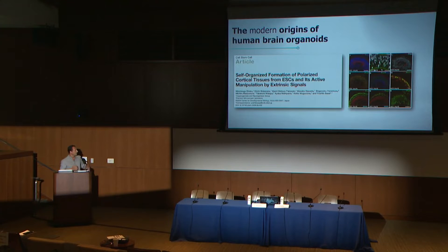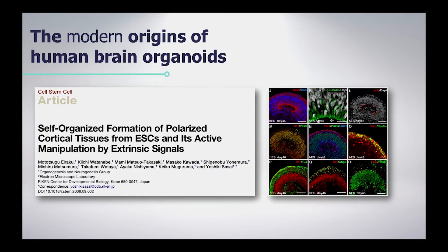Brain organoid technology is not new — some people think it is quite new, but in fact it was developed by Yoshiki Sasai in 2008. This is the first description in a Cell Stem Cell paper showing that if you just neuralize cells in suspension, they will self-organize and form what we now call brain organoids. At the time, they didn't even call them brain organoids, but the organization of the tissue is remarkably similar to the human fetal brain.